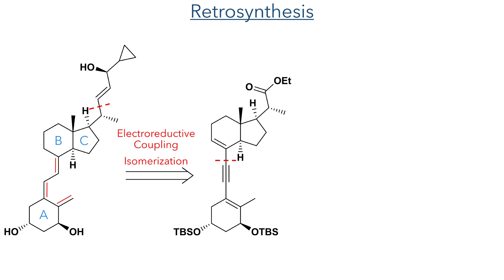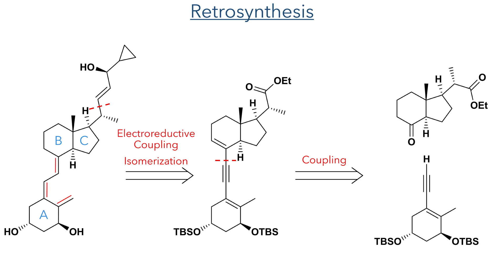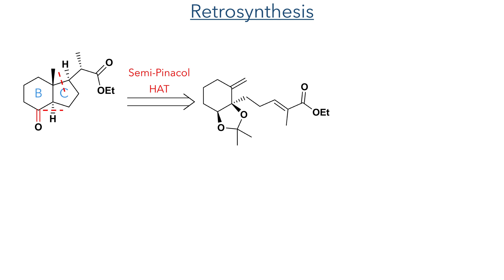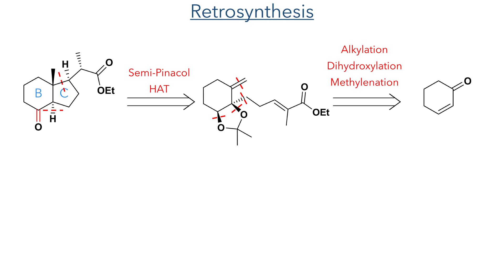So let's look at the retrosynthesis. We can first disconnect the side chain of the C ring, which could be introduced using an electroreductive coupling, and the triene system could be produced using an isomerisation of a diene ion. Disconnecting at this alkyne leads to two coupling fragments corresponding to the A ring and the B and C ring system. The trans-fused linkage between the B and C rings could be obtained using a semi-pinacol rearrangement. To form this C ring, they could utilise a radical hydrogen atom transfer reaction, which could form the carbon-carbon bond between the two alkene moieties. The precursor for this reaction could be derived from cyclohexanone using alkylation, dihydroxylation and methylation chemistry.